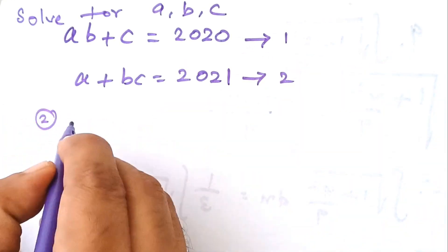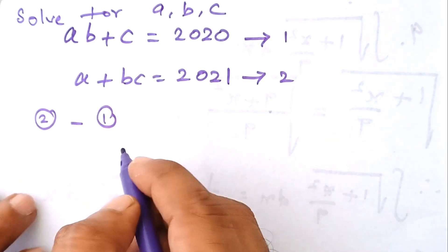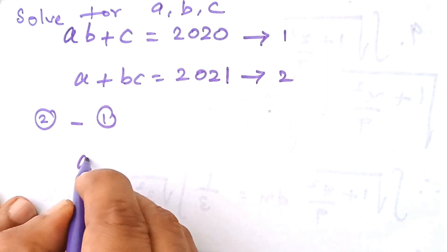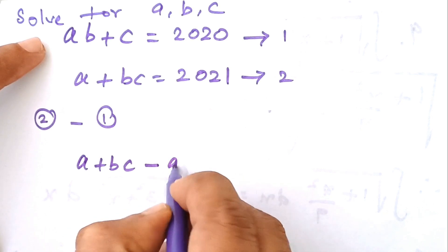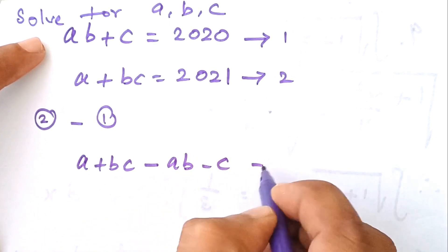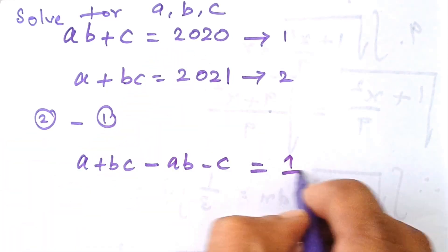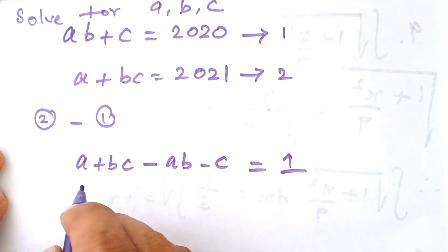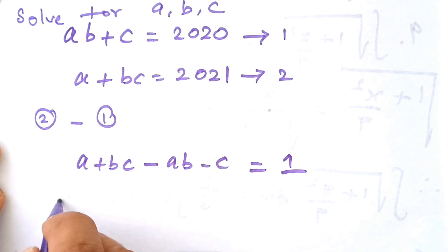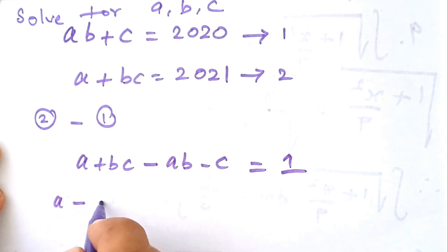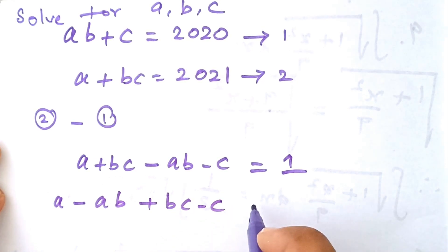So we have to go for equation 2 minus equation 1 — subtract equation 1 from equation 2. Then what happens? A plus B·C minus A·B minus C is equal to 2021 minus 2020, which is 1. Now I am grouping the left-hand side terms.